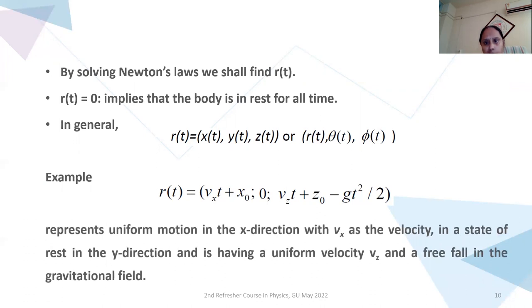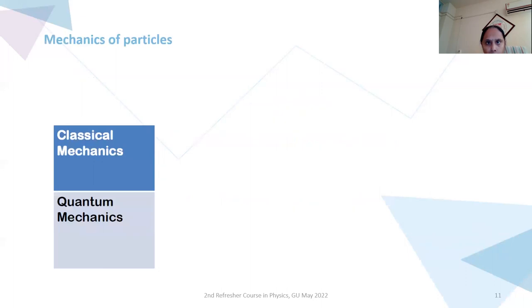And R of T represents uniform motion, that is Vx T, that is velocity in the direction of X axis with Vx as the velocity in the state of rest in the direction of Y axis, and having a uniform velocity V of Z and a free fall in the gravitational field. Here, this G T square by 2 defines a free fall in the gravitational field.